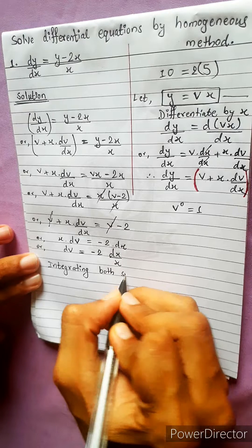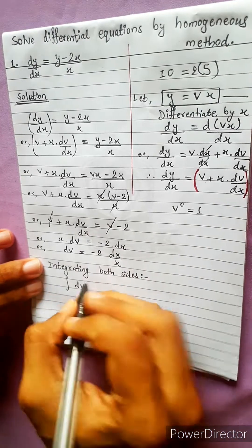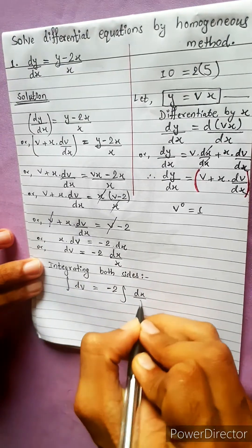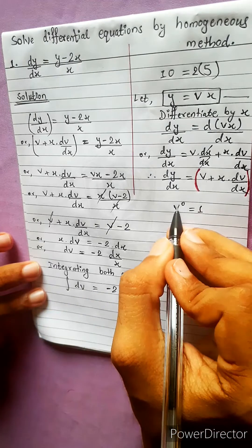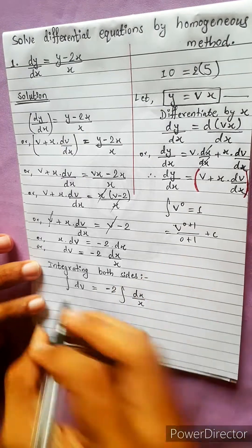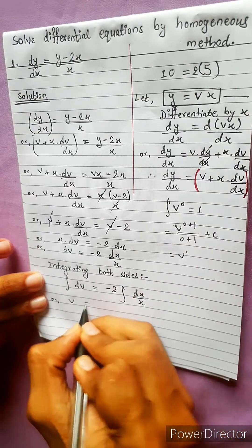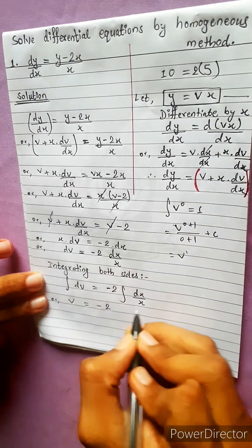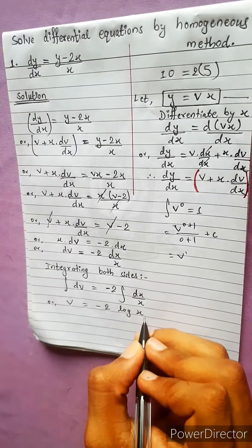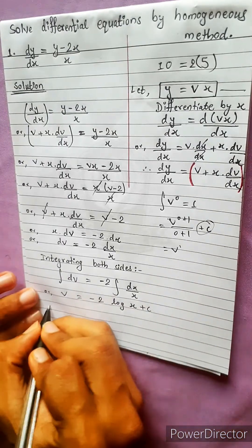Integrating both sides we get: integration of dv equals integration of minus 2 dx divided by x. The integration of dv is v (power 0+1 divided by 0+1). Therefore v equals minus 2 log x plus c.